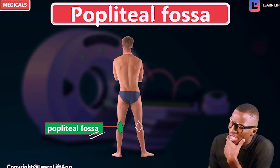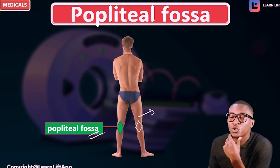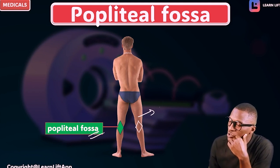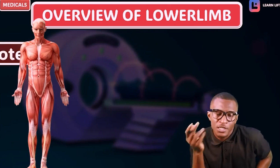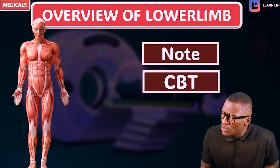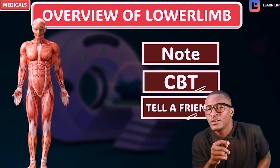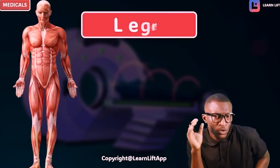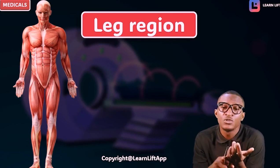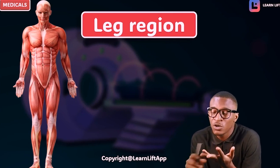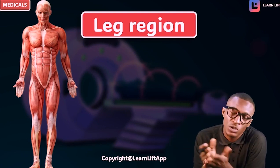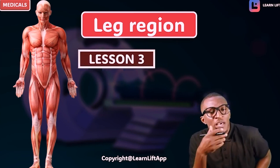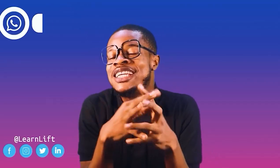The lower part of the posterior aspect of the thigh — who can remember? We said it's called the ham. The posterior aspect of the thigh is called the ham. That brings us to everything about the knee. Now go through the notes and practice CBT. In the next class we'll go further to talk about the leg region. We'll have talked about the gluteal region, the thigh region, and the knee region. We'll go further to the leg region, then the ankle region, then the foot. But for now, peace out. Hope you've enjoyed this class.